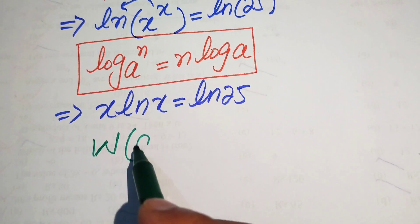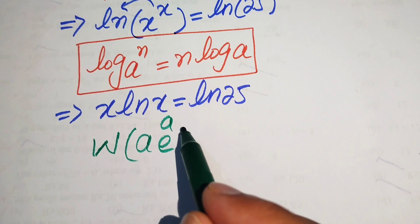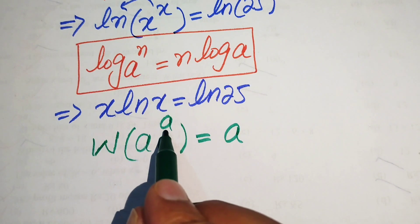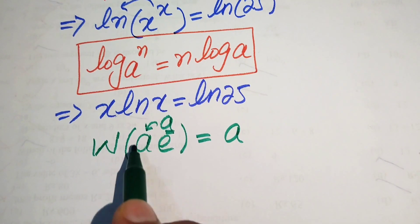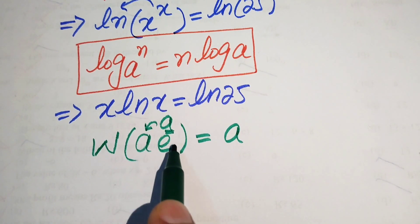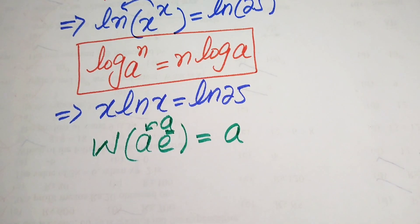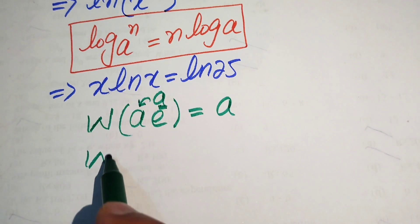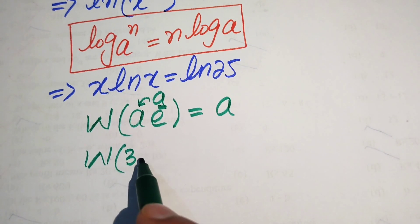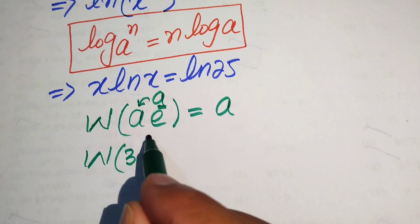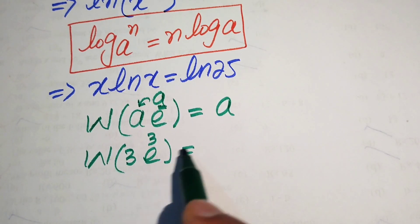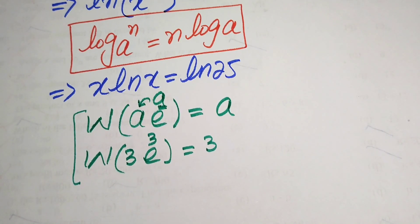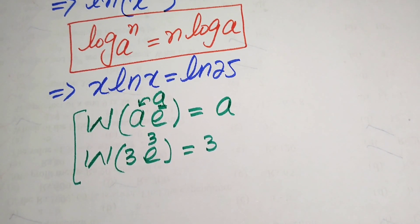The Lambert W function is defined such that W of (a · e^a) equals a. That is, if the exponent of e is multiplied by the same value, the output becomes that exponent. For example, W of (3 · e^3) equals 3.